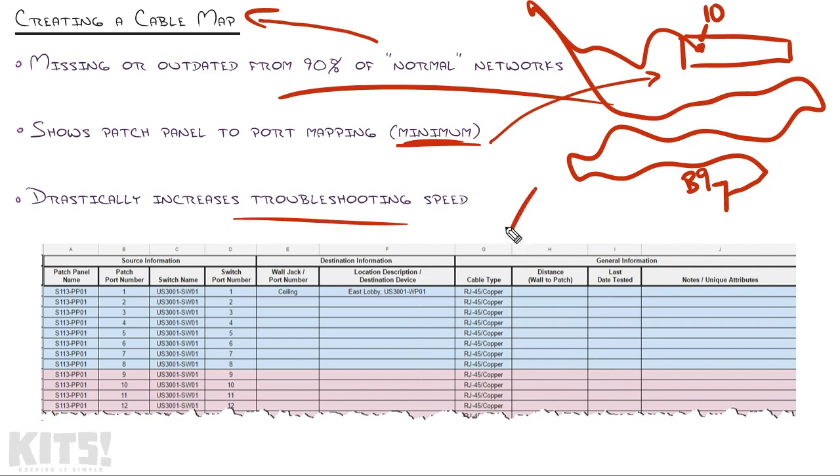Ideally, if you're creating the map, you would do something like this. This is a spreadsheet that shows the patch panel name - and you would need to label the patch panel. In this case, I said S113, representing Suite 113, PP01, that's Patch Panel 01. So I should have a label printed or engraved on the patch panel, an asset tag of some sort that has that name. Then I've got the port number one, and I have that all the way down - you can see it's cut off here - representing each one of the ports of the patch panel. Then I have this switch name. Notice all of this is under the source information, meaning this is the stuff that is sitting in the MDF. This patch panel port plugs into port number one of US3001-SW01.